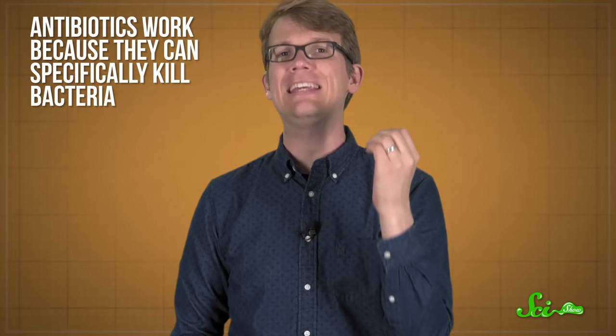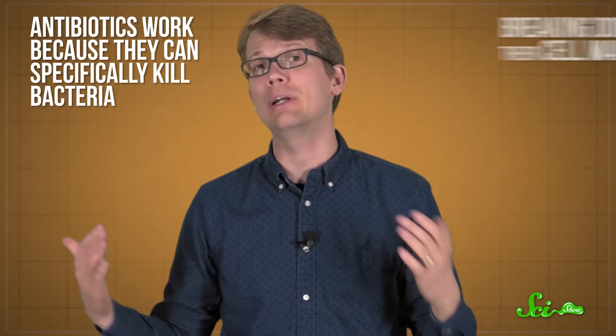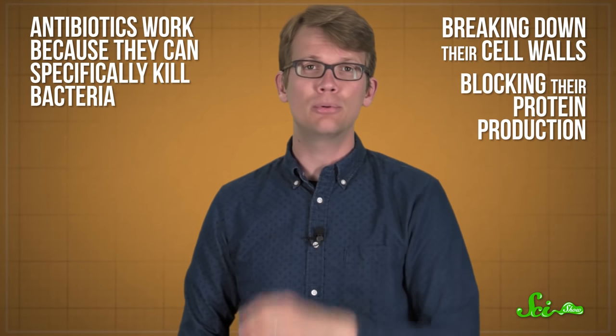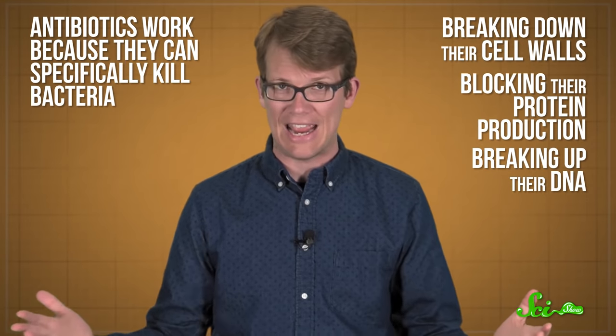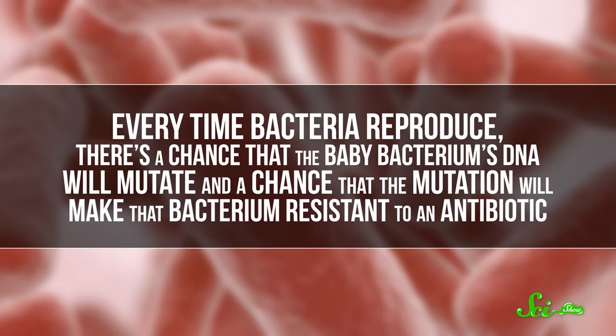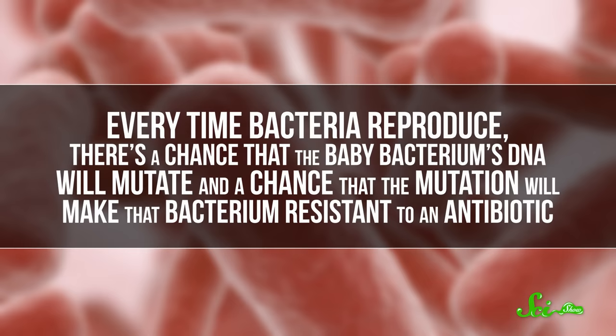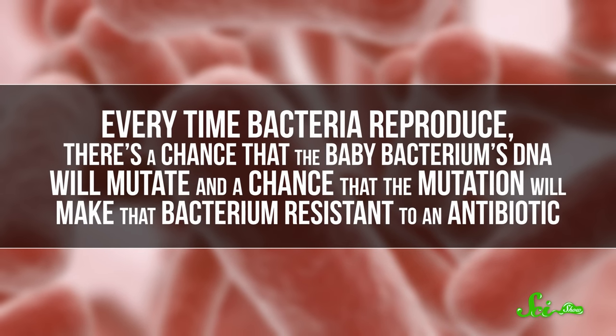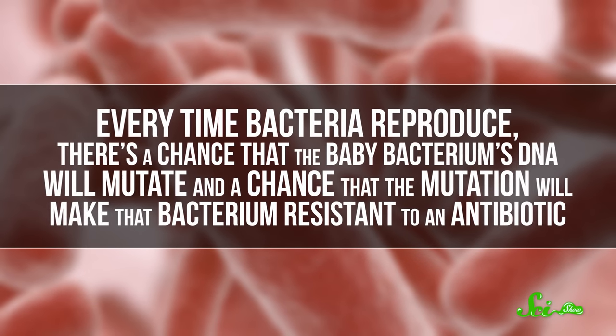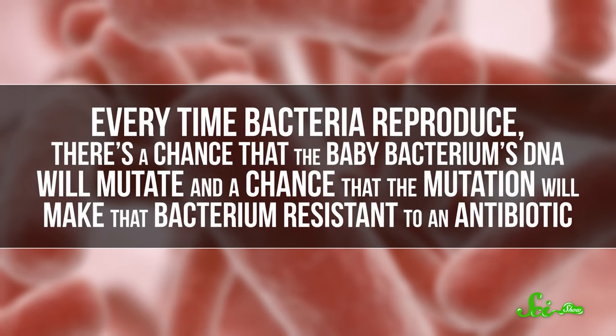Antibiotics work because they can specifically kill bacteria by doing things like breaking down their cell walls, blocking their protein production, or breaking up their DNA. The problem is, bacteria can reproduce very quickly, which means that they can make a lot of new bacteria in a very short span of time. And every time bacteria reproduce, there's a chance that the baby bacterium's DNA will mutate, and a chance that that mutation will make a bacterium resistant to an antibiotic.